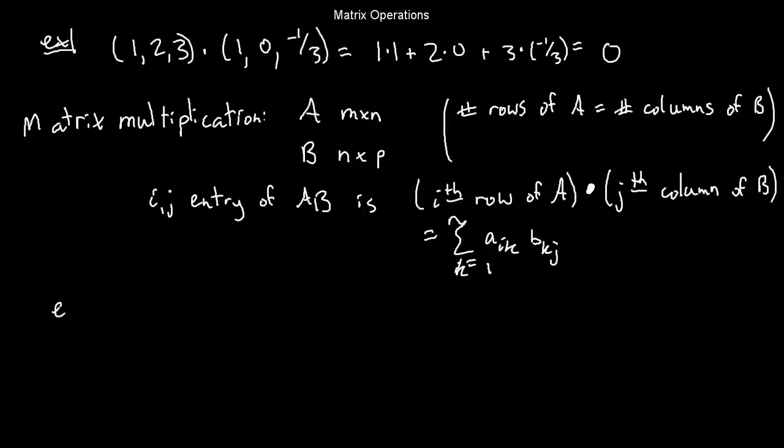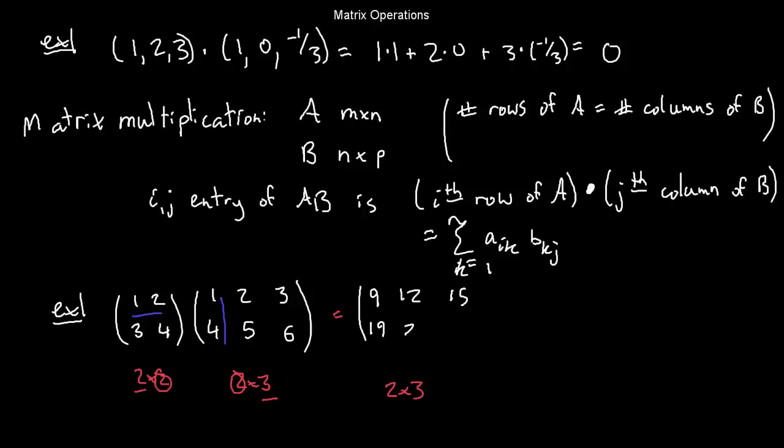Let's see an example. Suppose I take this matrix 1, 2, 3, 4, and I try to multiply it by the matrix 1, 2, 3, 4, 5, 6. I see that the left-hand matrix, that's my A, is a 2 by 2. And the right-hand matrix, that's B, that's a 2 by 3. Those 2's on the inside match, so I can multiply, and what I'll get will be a 2 by 3. What 2 by 3 is it? Well, to get that 1, 1 entry, the first row and first column, I take the dot product, the first row of A with the first column of B. So that's 1 times 1 plus 2 times 4, that's 9. Similarly, 1, 2 dot 2, 5 is 12, 1, 2 dot 3, 6 is 15, 3, 4 dot 1, 4 is 19, 3, 4 dot 2, 5 is 26, and 3, 4 dot 3, 6 is 33. That is how I multiply matrices.